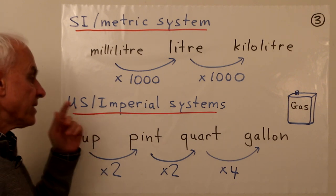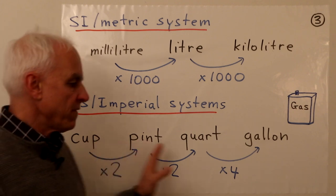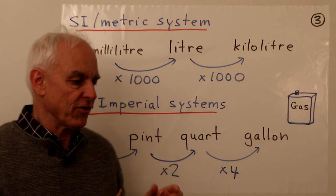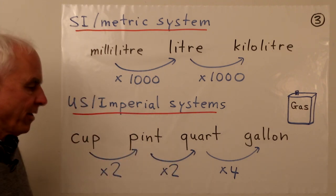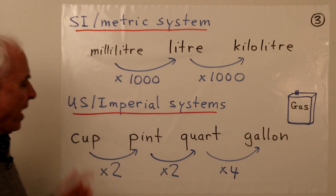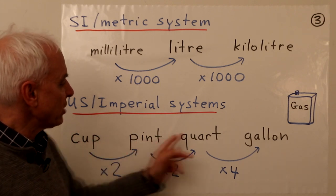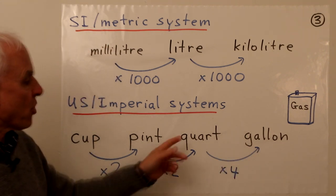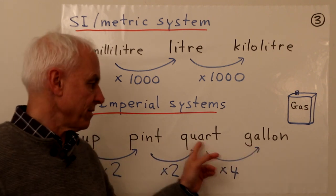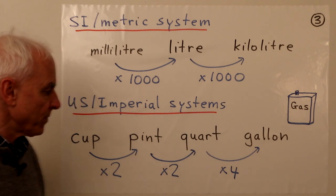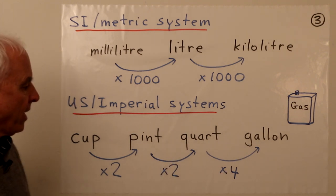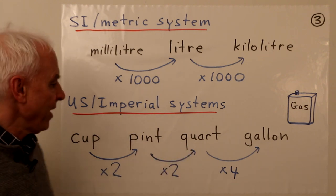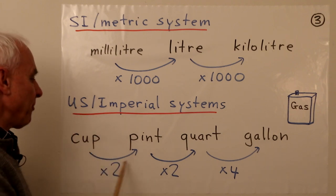There's a second system — the US or imperial systems — which have more or less the same structure but with different units. The units are the cup, pint, quart, and gallon. The quart is a quarter of the gallon — hence the word 'quart' — so four quarts make a gallon. A pint is half of a quart, so two pints make a quart, and a cup is half of a pint, so two cups make a pint.